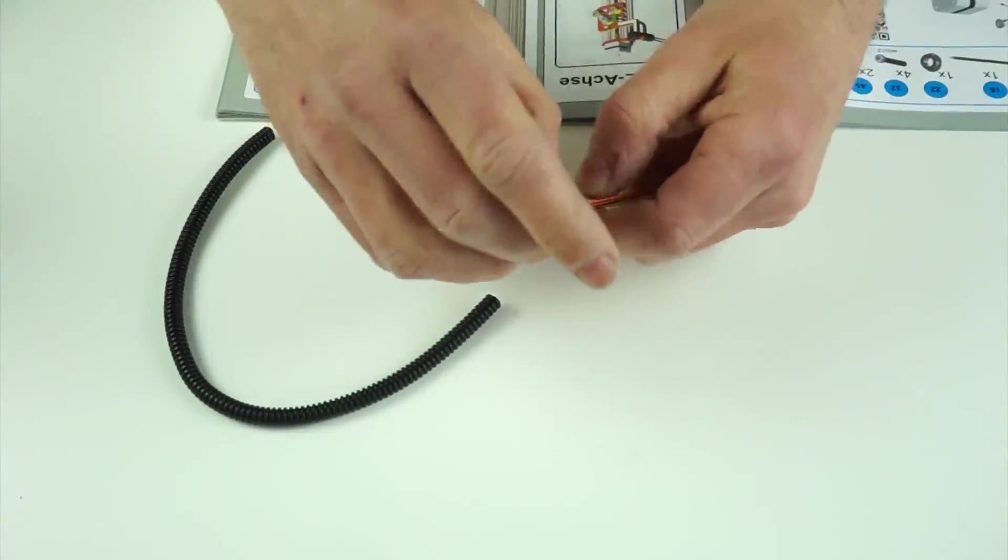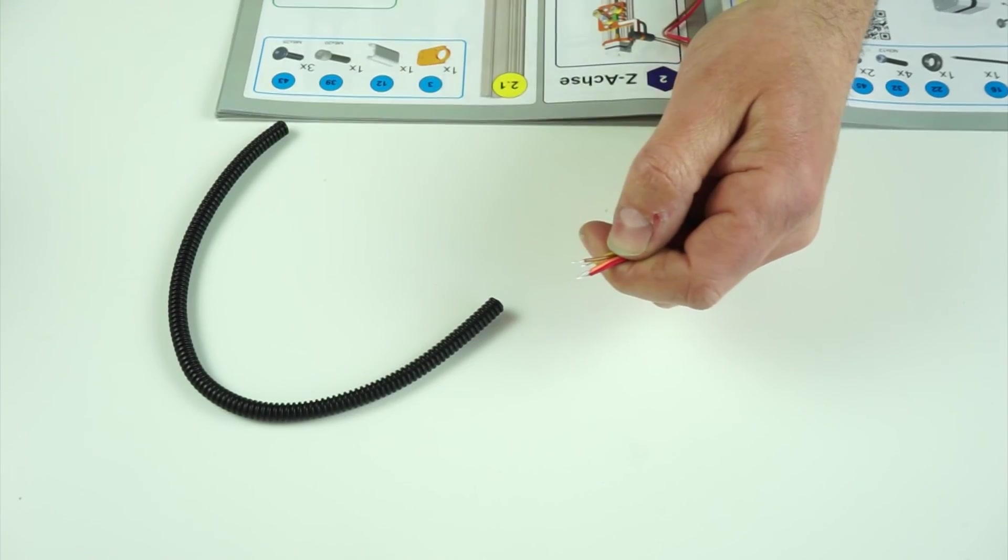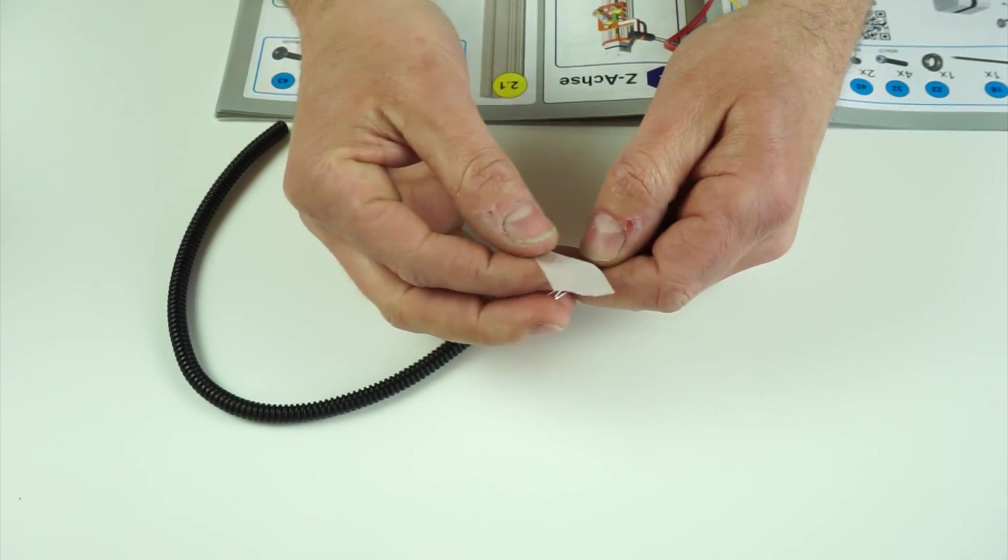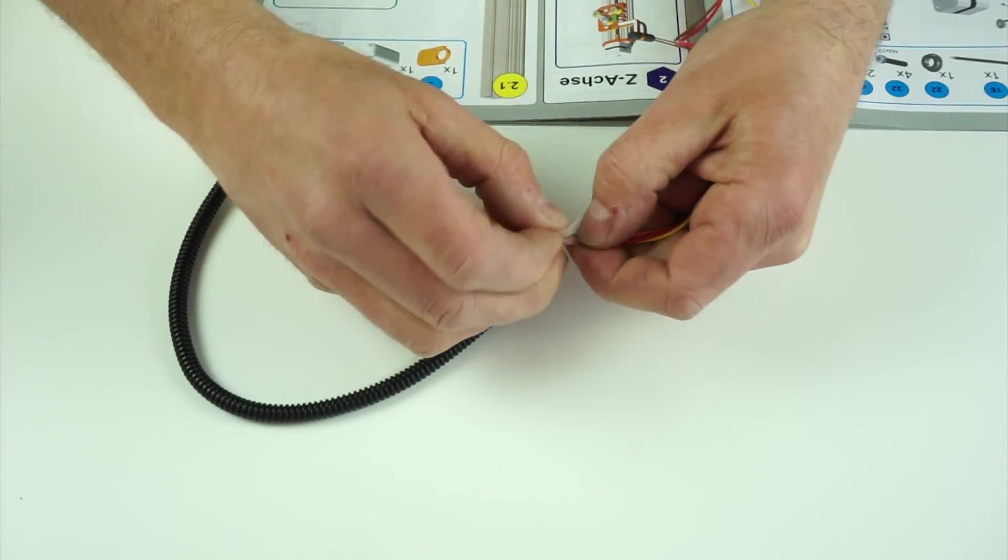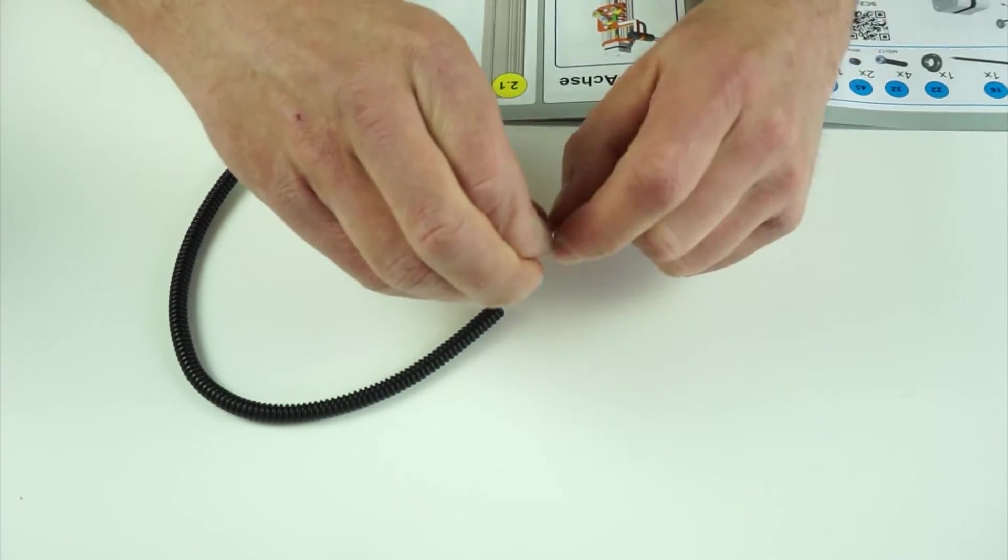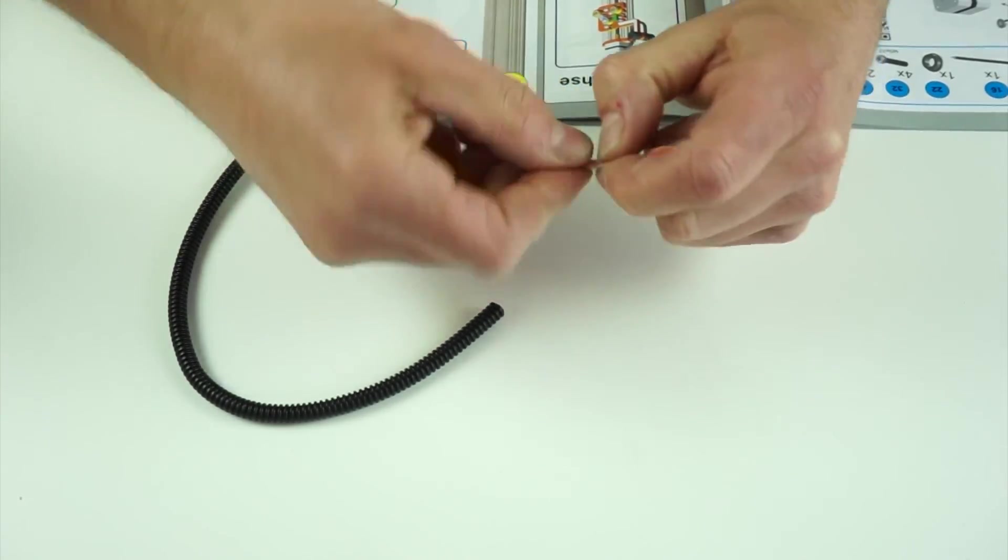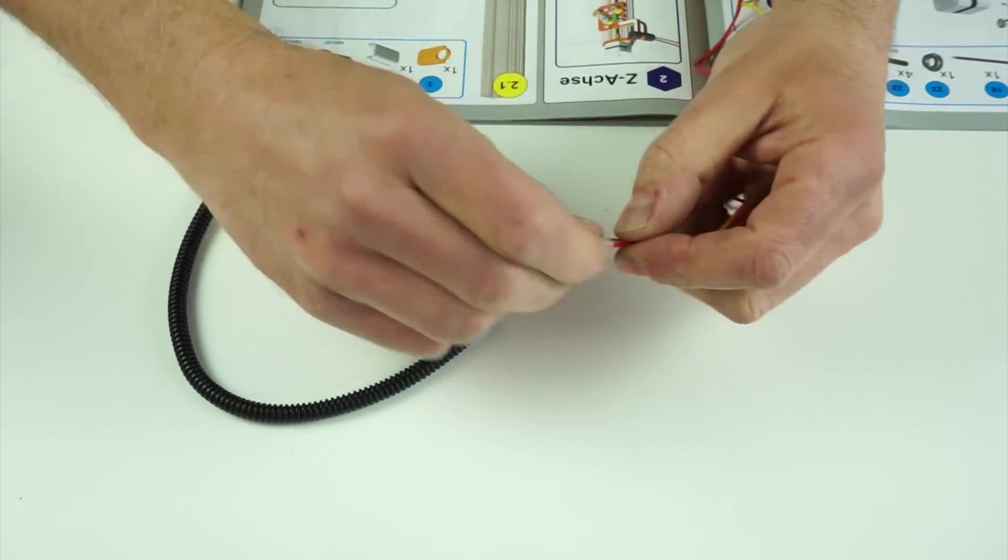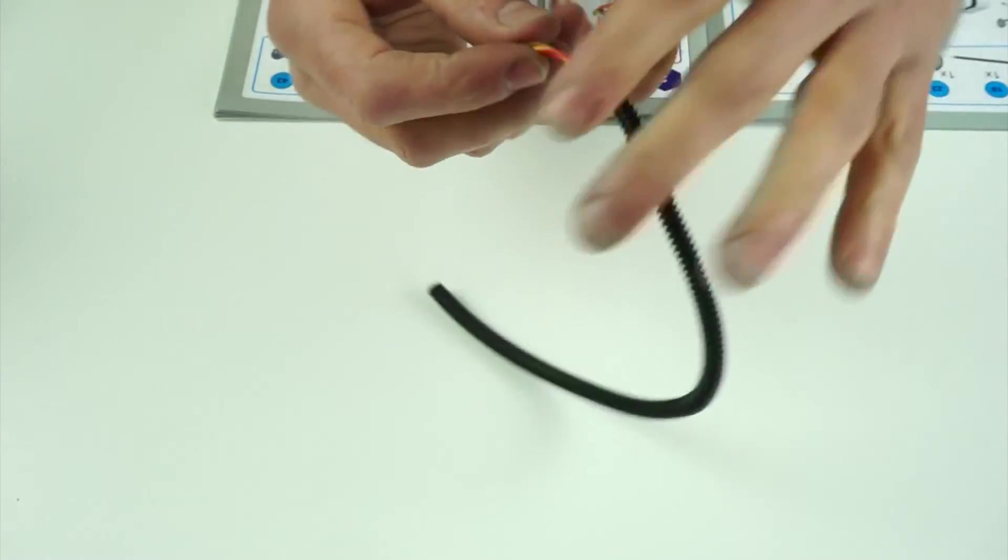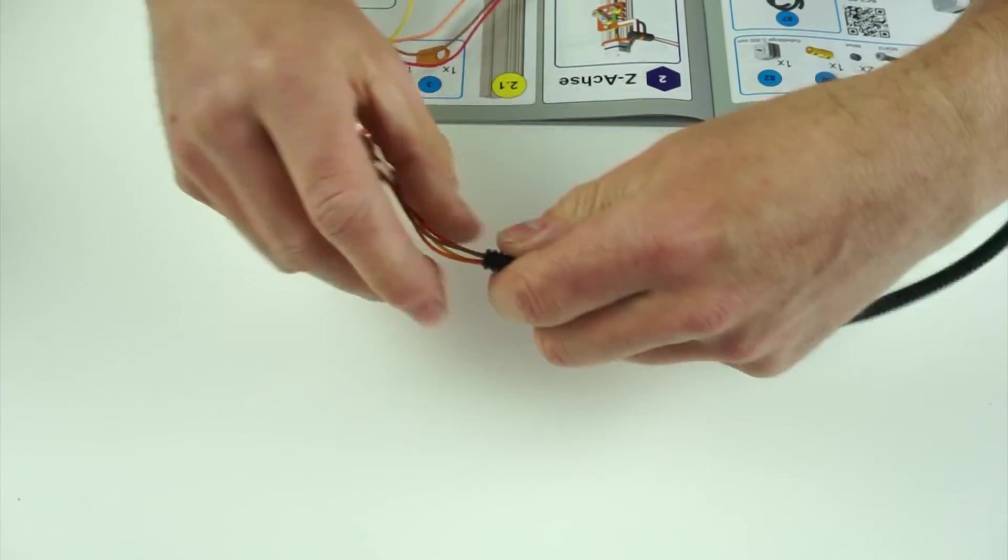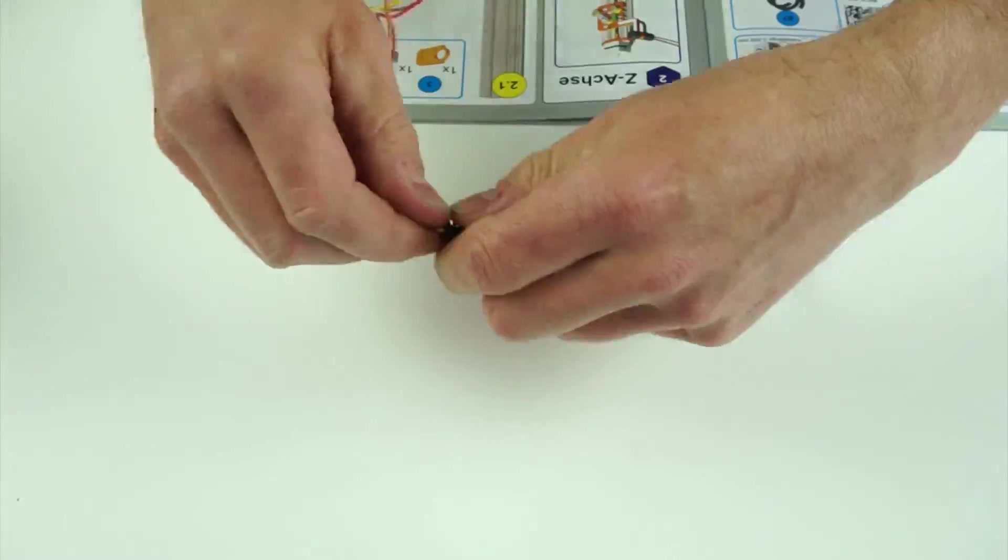To make it easier to slide the wires through the flexible hose, part number 87, wrap a piece of tape around the ends of the wires and twist the end of the tape. Then you can carefully slide the wires through the tube.